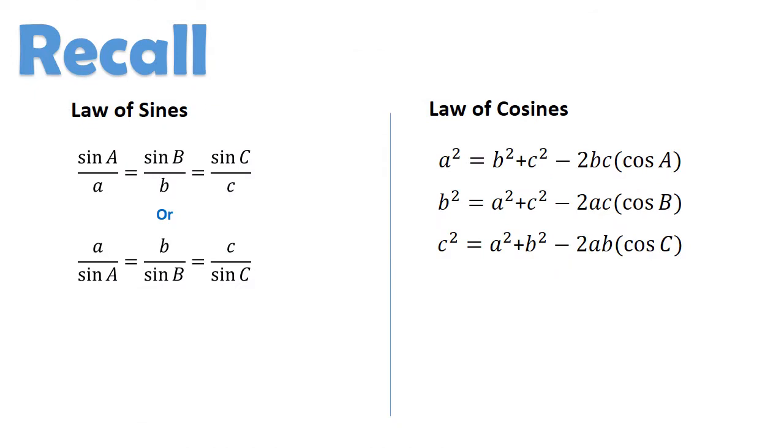So, let's do a quick recall. We already know that oblique triangles are those triangles with no right angles. And basically, we already know the formulas for Sine Law and Cosine Law.